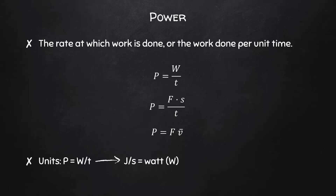The units for power would be joules per second, which honestly seems like a perfectly reasonable unit to write and say. However, we have defined a joule per second as a watt, named for the 18th century Scottish inventor James Watt, who contributed to the development of the steam engine.